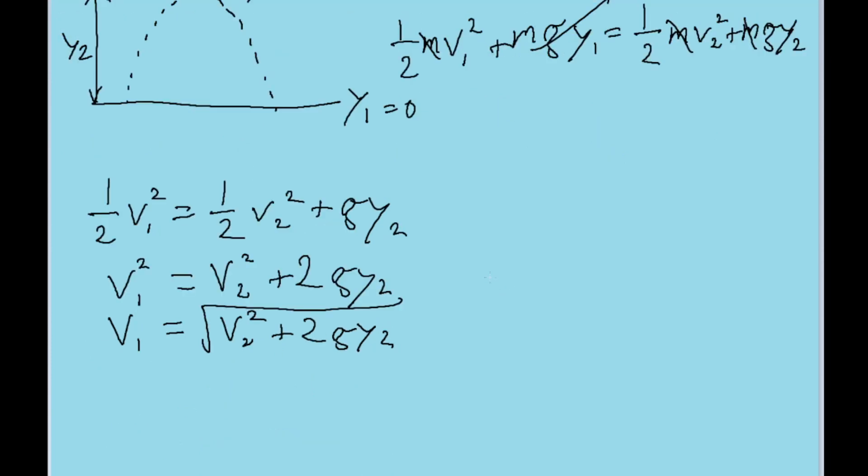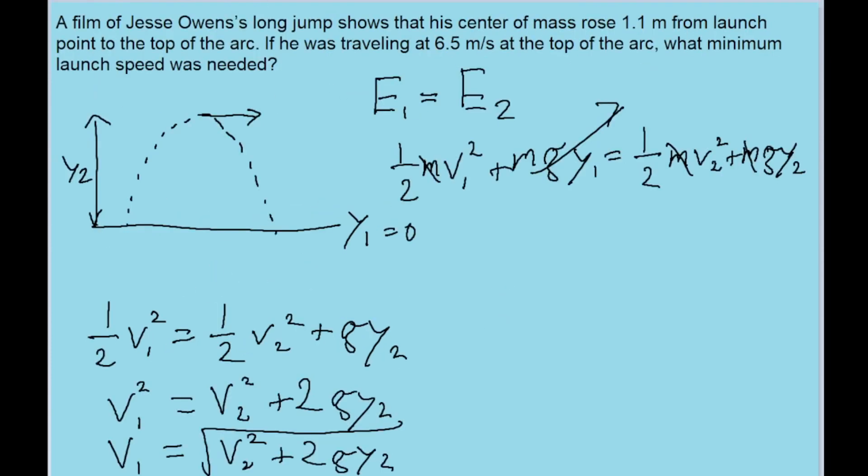One thing I can address right now, a possible misconception that some people might have, is that you do not want to cancel this term out. Some people might think that at the top of the arc there's no speed. And it's true, at the top of the arc there's going to be a vertical speed of zero. But in the case of this problem, he still has a horizontal motion there.